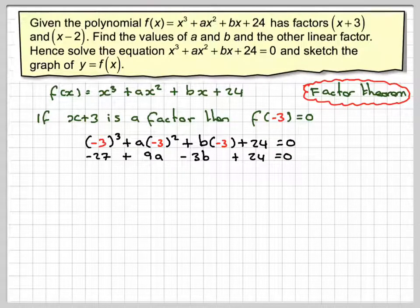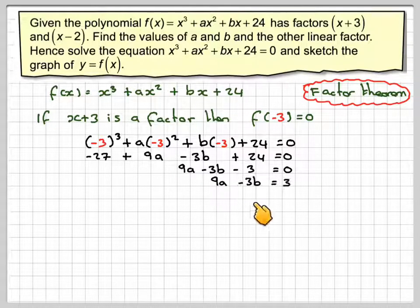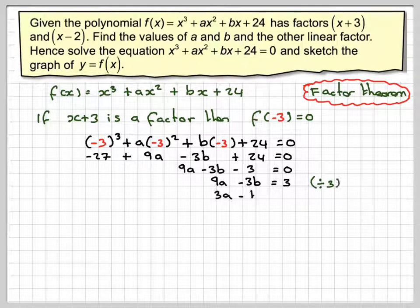Collecting that together, we're going to get 9a - 3b, and -27 + 24 is -3, equals 0. So 9a - 3b = 3. Divide through by 3, we get 3a - b = 1. We'll call that equation 1.